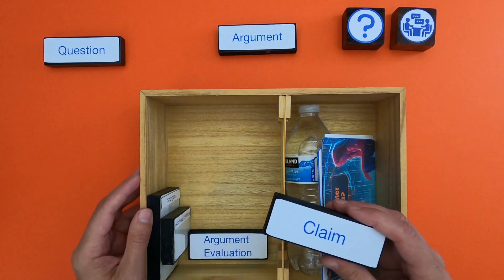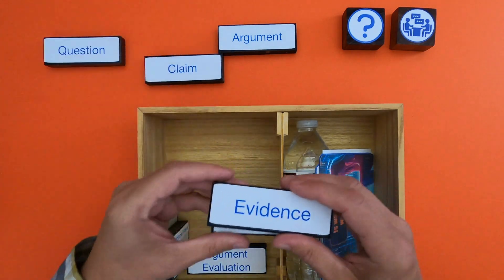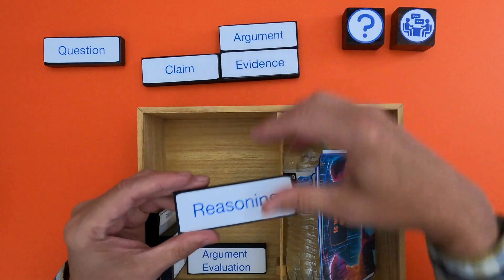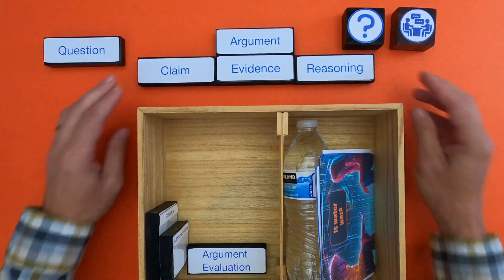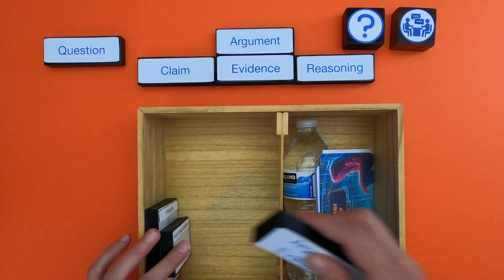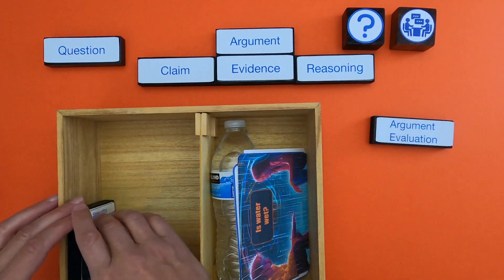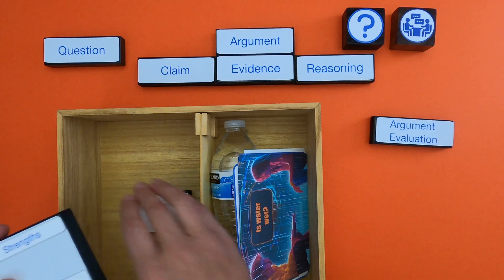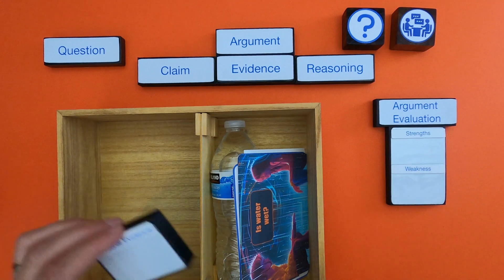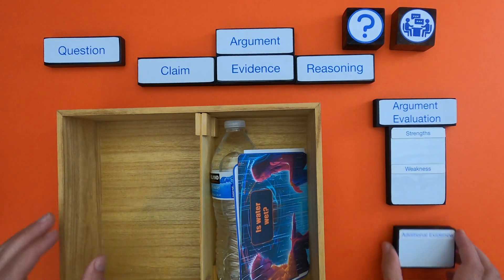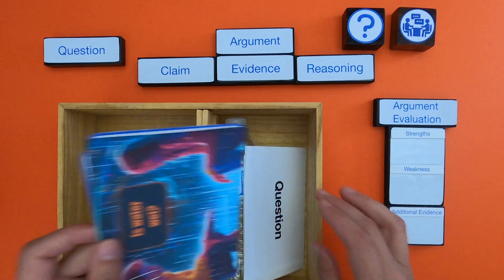Next you look at the structure of the argument. You want to identify what is the claim, what is the evidence, and what is the reasoning. After you've done that for a couple of students, we're going to analyze the argument — looking at the strengths and weaknesses, and then what additional evidence could we gather to help determine which argument is correct.